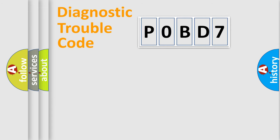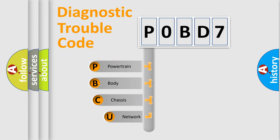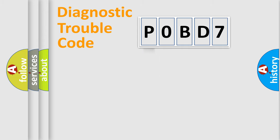Let's do this. First, let's look at the history of diagnostic fault code composition according to the OBD2 protocol, which is unified for all automakers since 2000. We divide the electric system of the automobile into four basic units: Powertrain, Body, Chassis, and Network. This distribution is defined in the first character of the code.